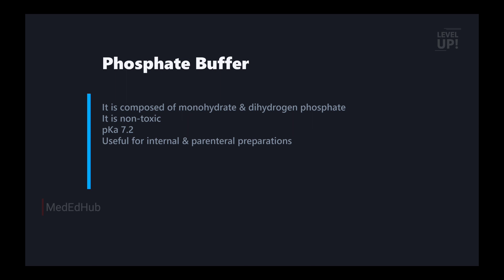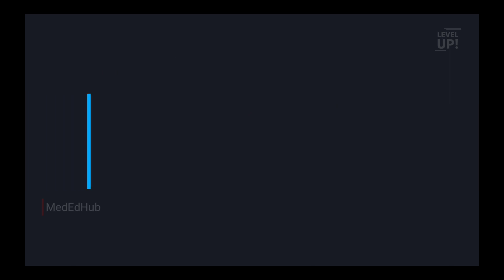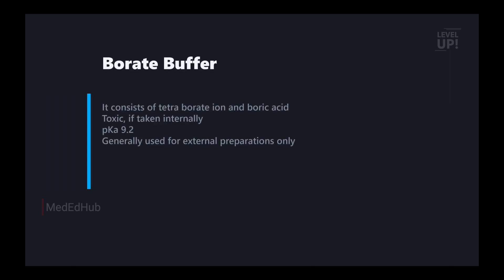We have two more buffers. The phosphate buffer — monohydrogen phosphate and dihydrogen phosphate — is a non-toxic buffer with pKa 1.2. It is used in pharmaceutical preparations, both Indian and parallel preparations. Next is borate buffer, which is toxic. It consists of tetra borate ion and boric acid. It has a pKa of 9.2. Generally, it is used for external preparations — we use liniments or lotions.